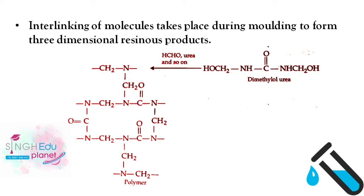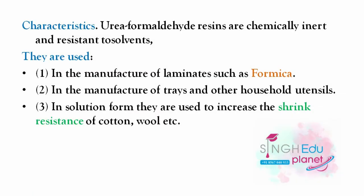This is important from an examination point of view. Urea formaldehyde resins are chemically inert and resistant to solvents. They are used in the manufacture of laminates such as Formica, trays, and other household utensils. In solution form, they are used to increase the shrink resistance of cotton and wool.